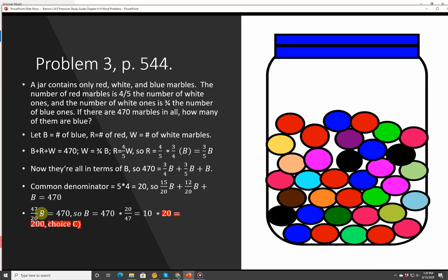The common denominator is going to be 5 times 4, so it's 20. This 3 fourths becomes 15 twentieths, and 3 times 4 over 5 times 4 becomes 12 over 20. These add up to 27 over 20. B is, of course, 20 over 20, so you end up with 47 over 20B equals 470. B equals 470 times 20 over 47. We know that 10 times 47 is 470. Those cancel out. So you just end up with 10 times 20, which is equal to 200, which is choice C.